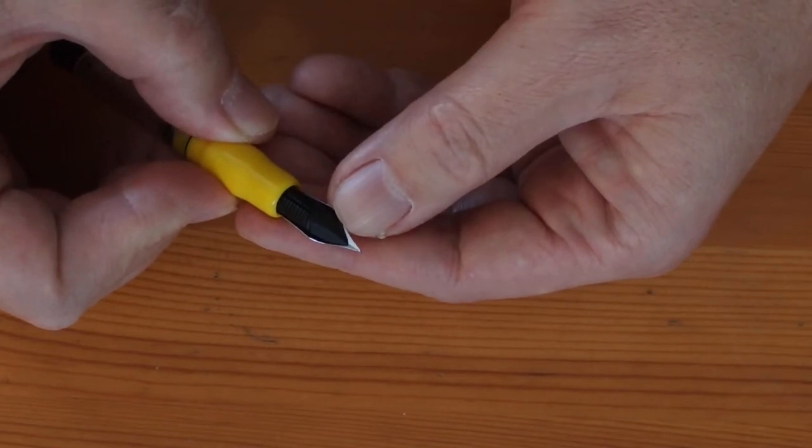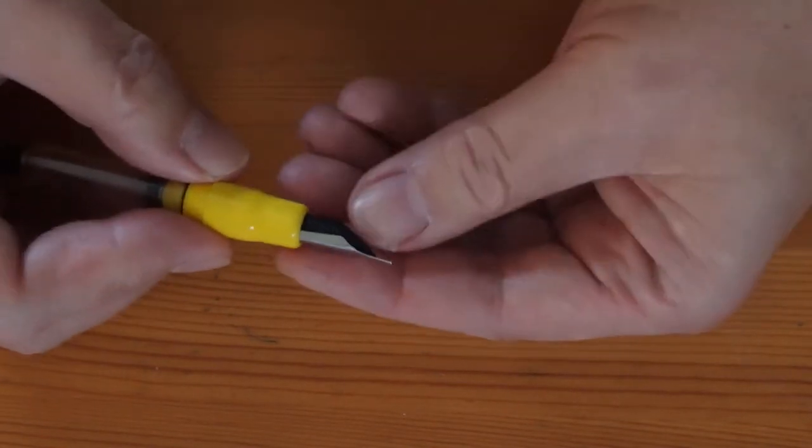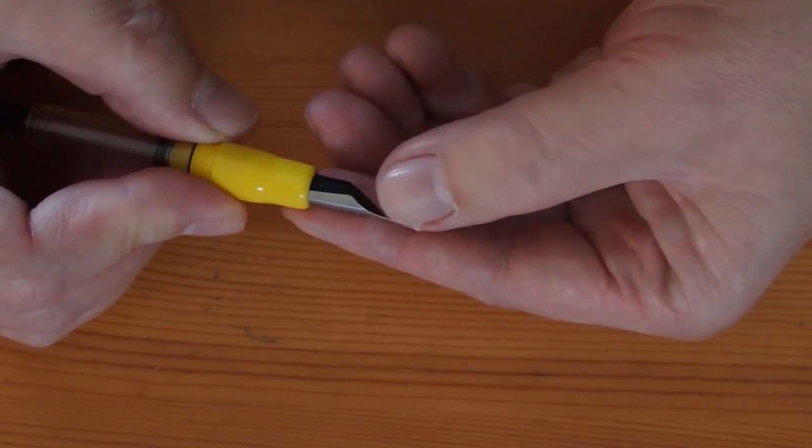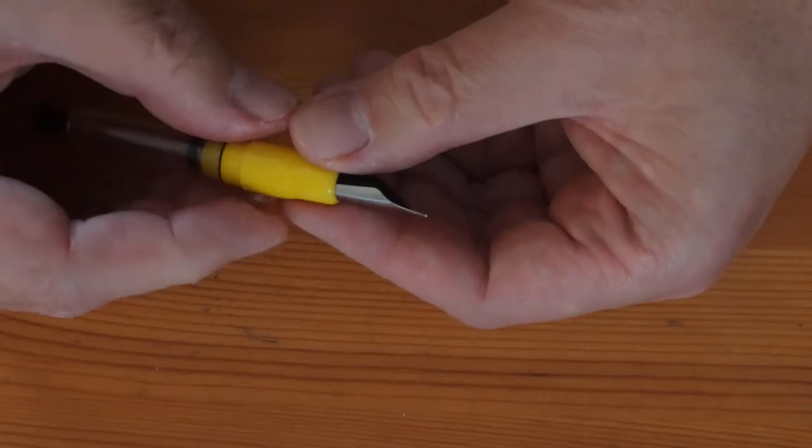To ensure a good ink supply, the bottom of the nib and the top of the feed needs to have good contact to give good capillary action between them, so that during writing, ink is pulled out of the nib with no interruption.